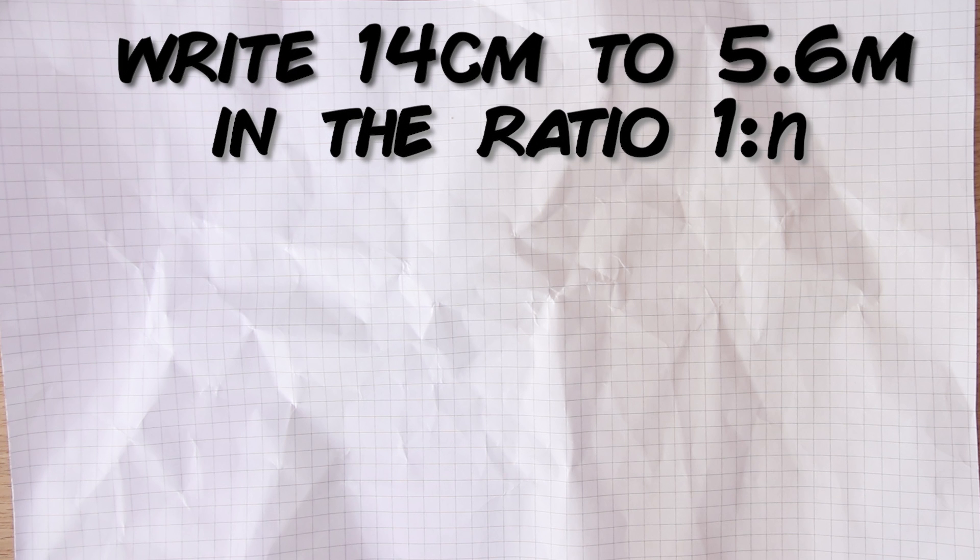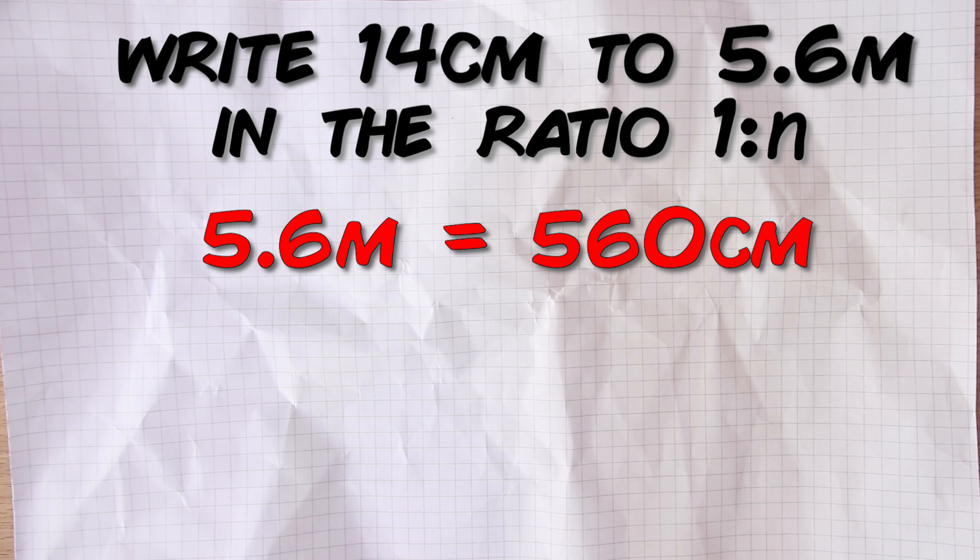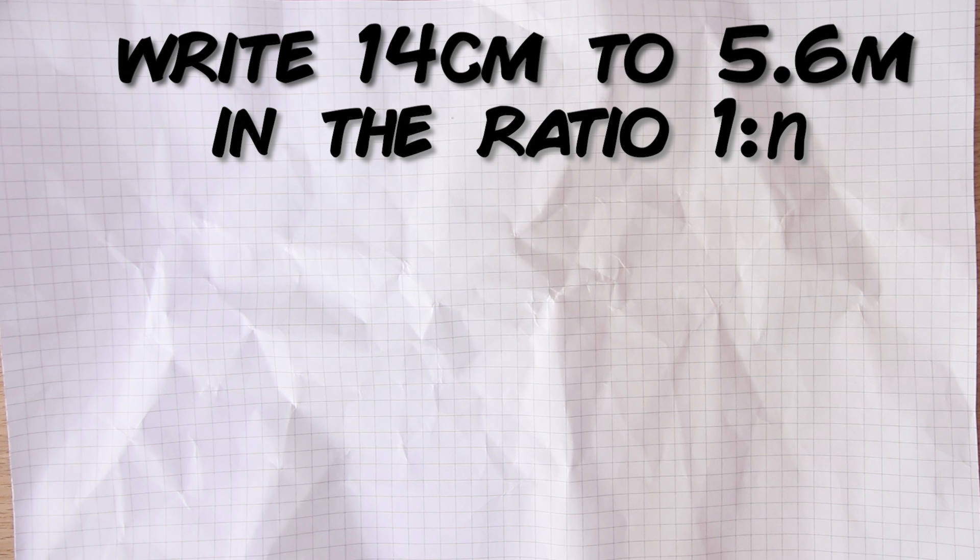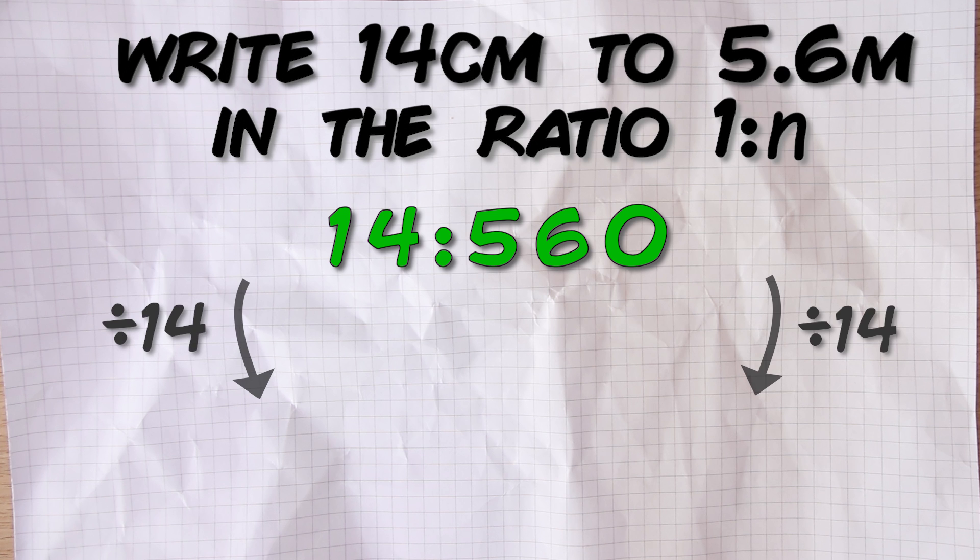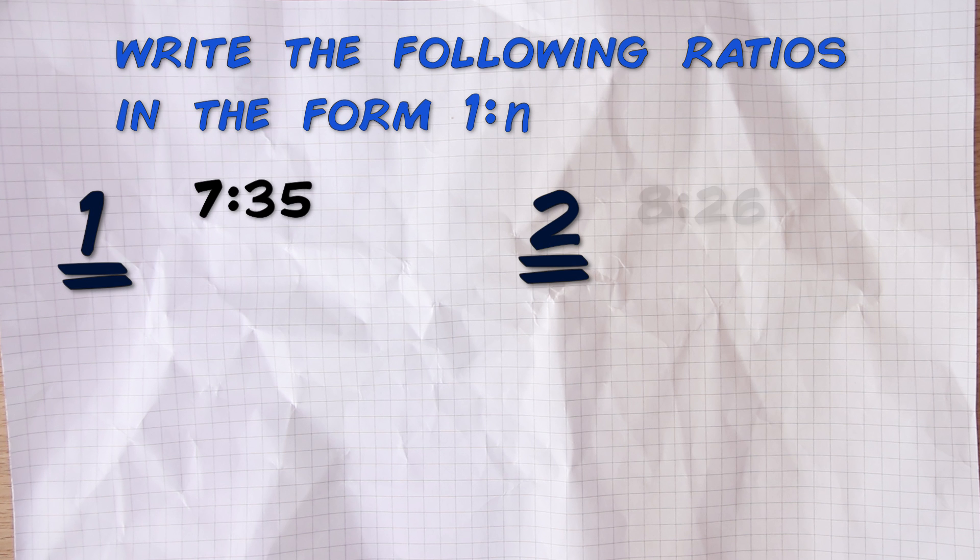Write 14 centimeters to 5.6 meters in the ratio 1 to n. Now you have to be really careful with these because I don't know if you noticed but those are different units of measurement - one is meters and one is centimeters, and it's really easy to miss that. So to be able to compare them in a ratio we need them both to be using the same unit, so let's convert them both to centimeters. 5.6 meters is 560 centimeters - you just multiply by 100 to convert from meters to centimeters. Now our first number is 14 so we want to divide both parts by 14. 560 divided by 14 is 40, and I must admit I just use a calculator for that, but we could have used short division, you know, bus stop division. I use the calculator so the ratio is 1 to 40. Here's a few of those for you to practice. Pause the video and I'll be back in a few seconds.